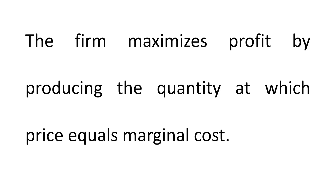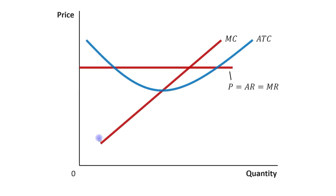The firm maximizes profit by producing the quantity at which price equals marginal cost. We have already learned that the profit-maximizing condition is P equals MC in a competitive firm. Where the price line and the marginal cost curve intersect is the point where price equals marginal cost.